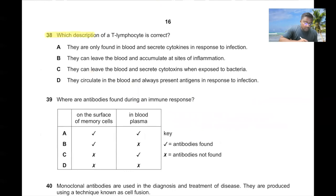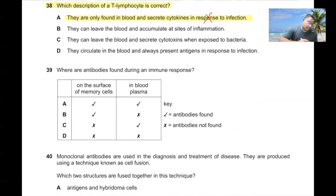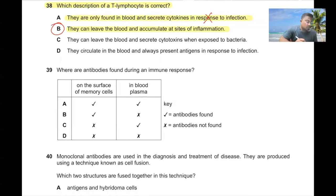Question number thirty-eight. Which description of T-lymphocytes is correct? They are not only found in blood — they can be found in other places as well. T-lymphocytes can leave the blood and accumulate at the site of inflammation. That is correct. 38B is the correct answer.